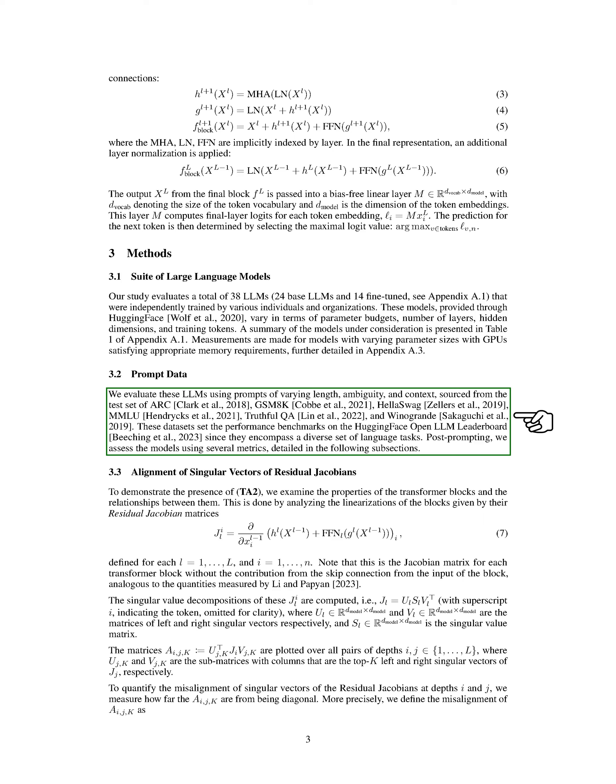In this section, we assess the performance of language models, LLMs, by using various prompts with different lengths, ambiguity levels, and contexts from datasets like ARC, GSM8K, HellaSwag, MMLU, TruthfulQA, and Winogrande. These datasets are crucial for setting performance standards on the Hugging Face Open LLM leaderboard as they cover a wide range of language tasks.